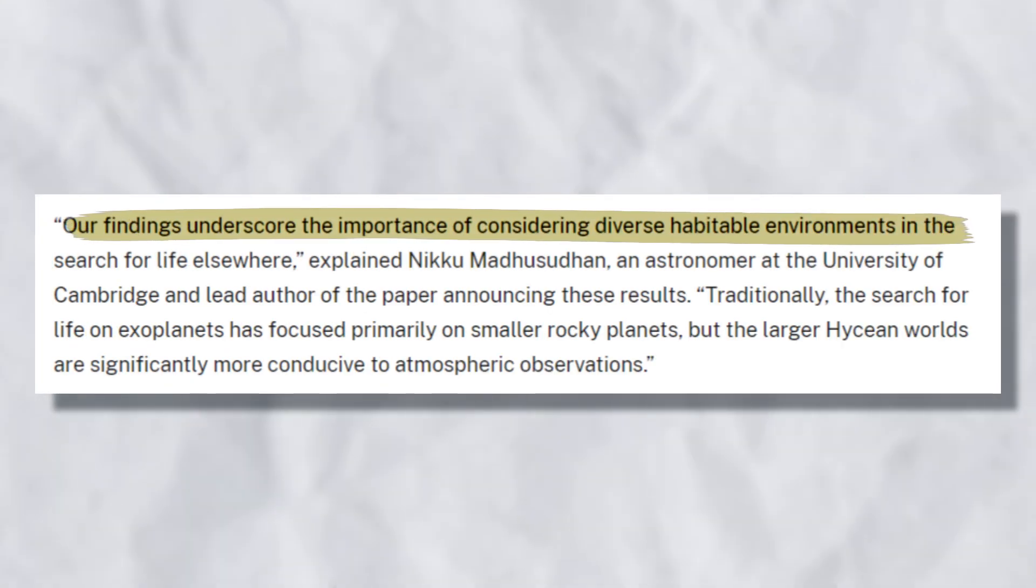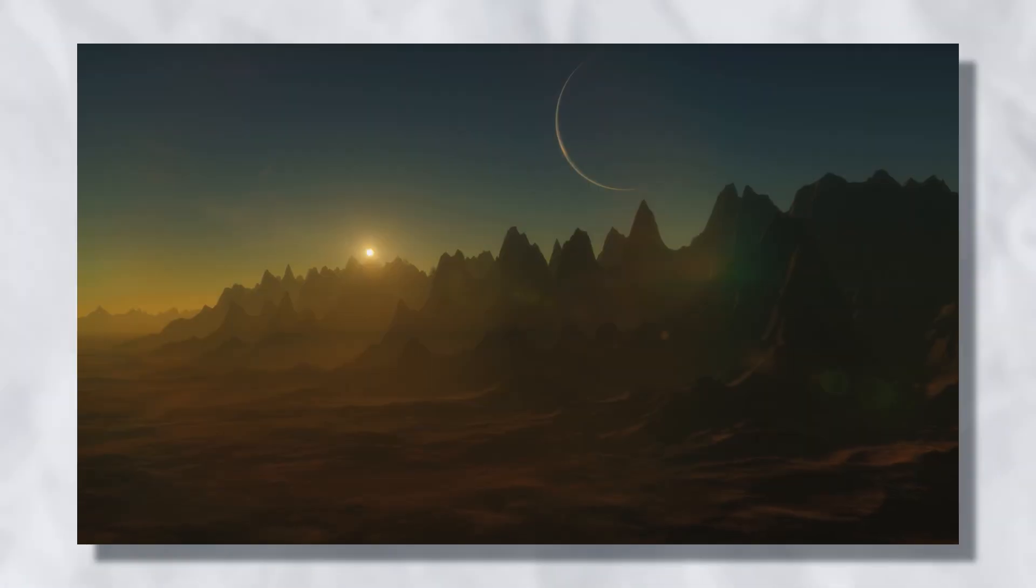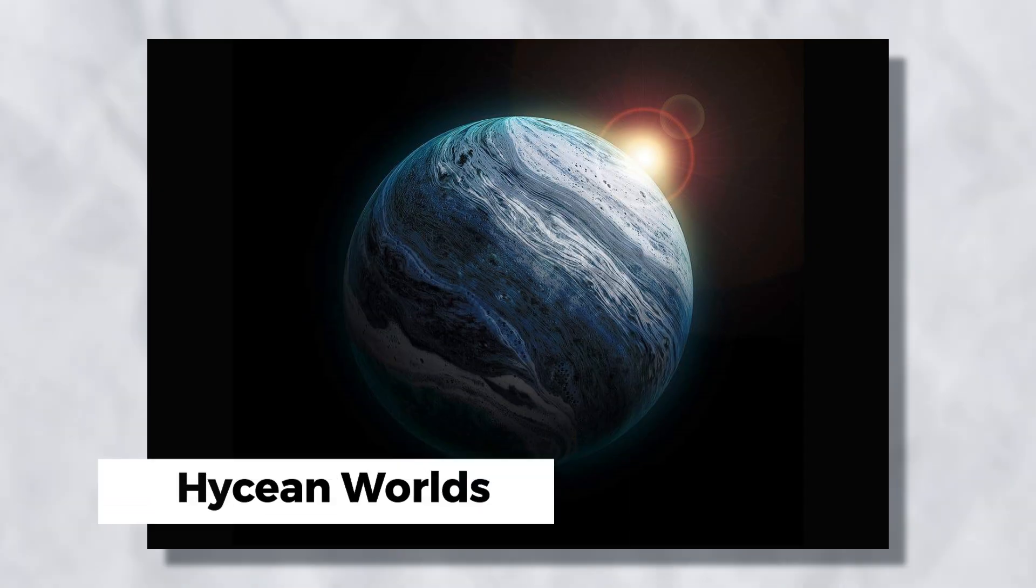Madhusudhan said, our research shows we should look at different types of places when searching for life elsewhere. Usually we look at small rocky planets, but bigger planets like Hyacian worlds are easier to study for their atmospheres.